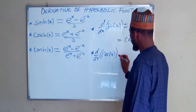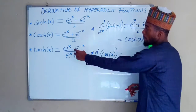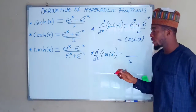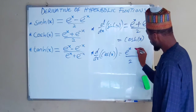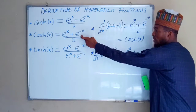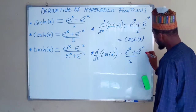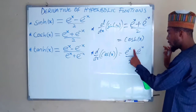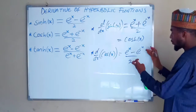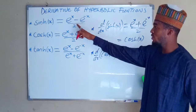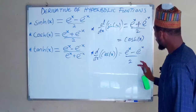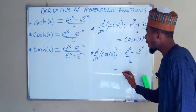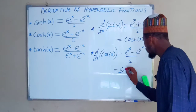Now let us take the second one: the derivative of hyperbolic cosine of x. We apply the same principle — the denominator 2 remains constant. The derivative of e^x remains e^x, and for e^(-x) we multiply by the derivative of the exponent, which is negative 1, changing the plus to minus. This resulting function is just the same as hyperbolic sine of x. Therefore, the derivative of cosh(x) equals sinh(x).